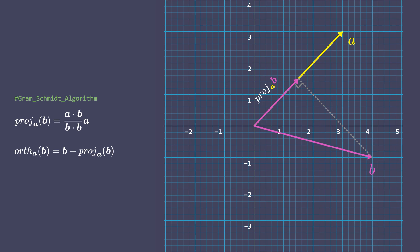So, this orange vector is the component of b that is orthogonal to a. Thus intuitively, it can be seen that b can be split into two components. One that is along the same direction as a and the remaining which is orthogonal to that direction.